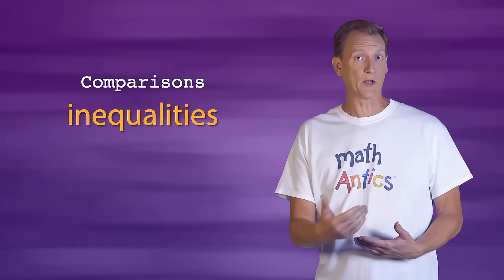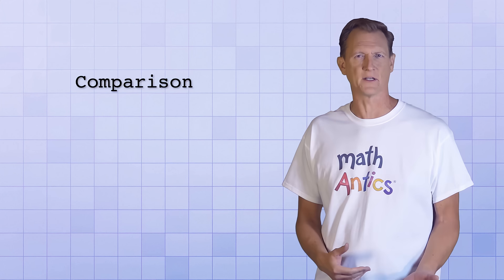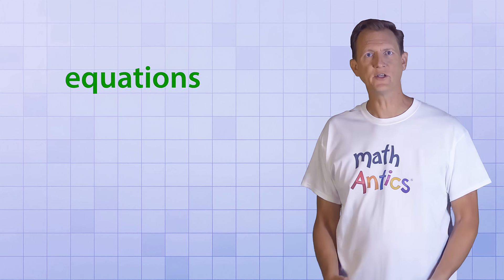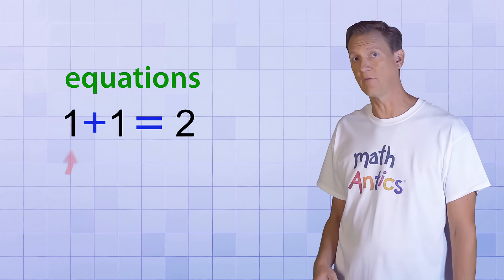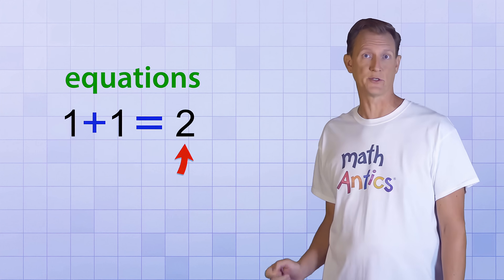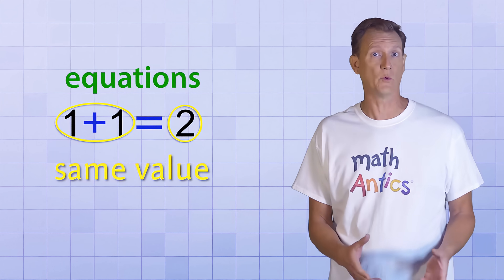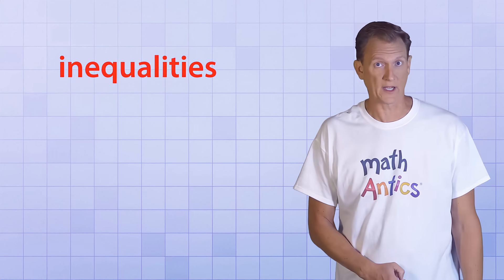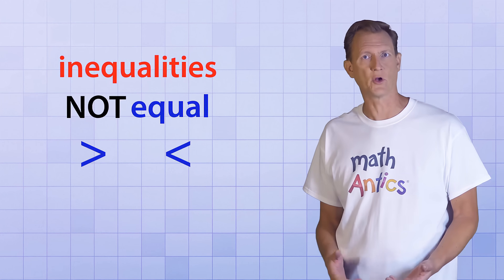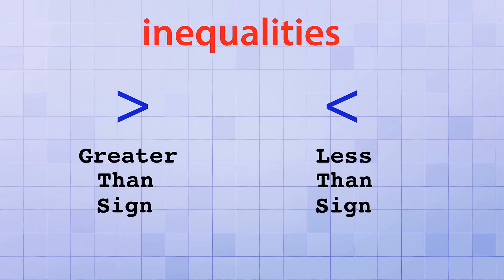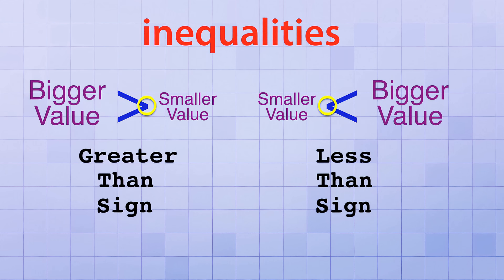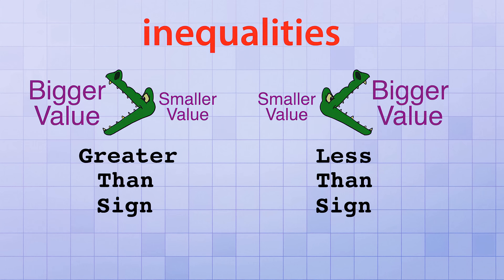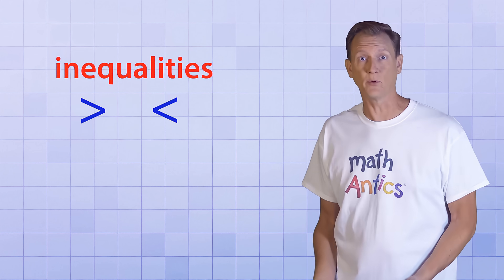To help you understand what inequalities are, let's first start with a different kind of mathematical comparison called equations. You've heard of equations, right? Equations use a special symbol called the equal sign, like 1 plus 1 equals 2. This simple equation tells you that if you have 1 and add one more to it, the value you get exactly equals 2. So equations tell you when two things have the same value, which means they're equal. Inequalities, on the other hand, tell you when things are not equal. They use two different symbols called the greater than sign and the less than sign.